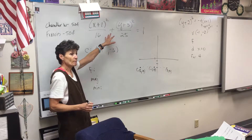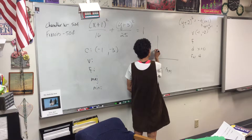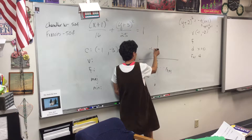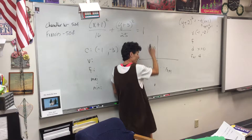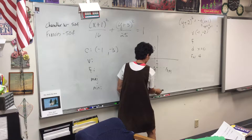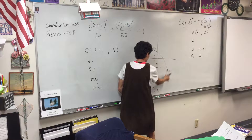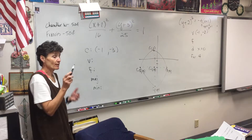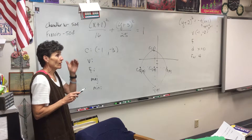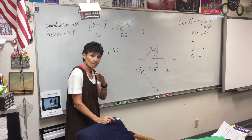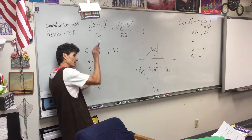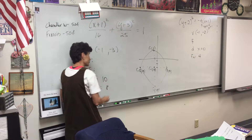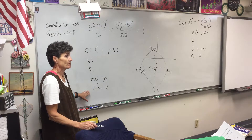The 25 tells me I'm going to go up and down 5. Going up 5 gives negative 1, 2. Going down 5 gives negative 1, negative 8. Those are the four vertices. The major axis is up and down because I went up and down 5 and only sideways 4. So the major axis length is 10, and the minor axis length is 8. We're talking about the length of the major and minor axes.